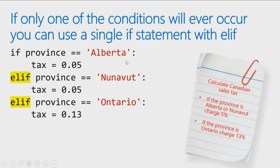ELIF allows me to say: check if province is Alberta; if it's not, then check the next condition — otherwise, if the province is Nunavut, check the next condition; if province is Ontario, check that one. Basically it goes down the list, and when it finds a match, it sets the tax to the appropriate rate and exits the if statement right there. ELIF is a more efficient way of checking conditions — it's great when only one condition will ever be met.